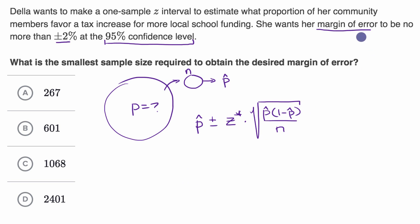She wants the margin of error to be no more than 2%. The margin of error is this part right over here. She wants this to be no more than 2%, has to be less than or equal to 2%.